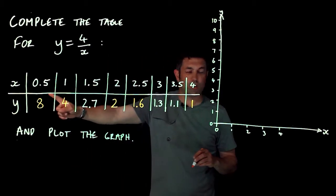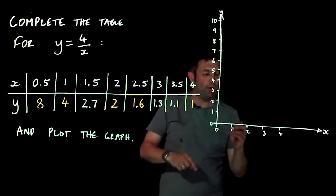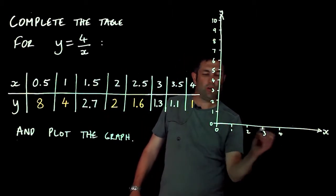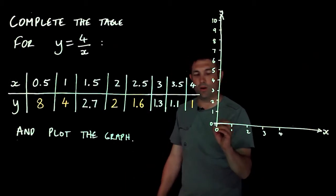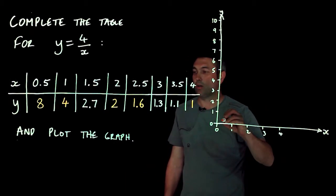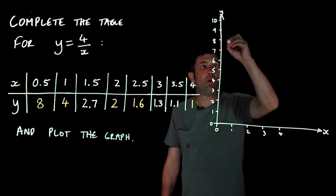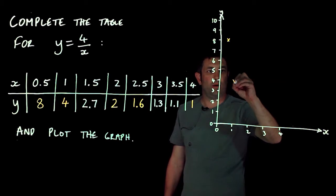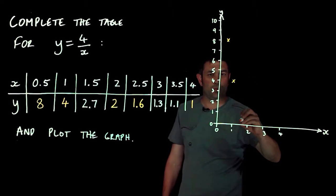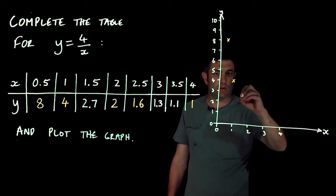Now I'm going to plot these points. They haven't been that nice to me with the scale here but that's not a problem because I know that half is halfway between 0 and 1. So 0.5, 8 there, 1, 4 there, notice I'm plotting with crosses again, we always plot with crosses, 2.7 is there.